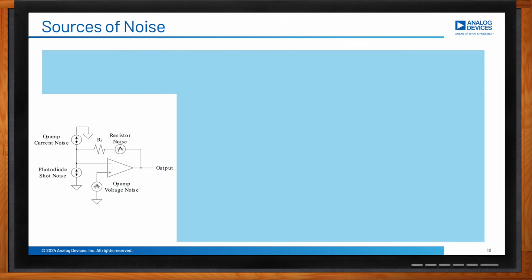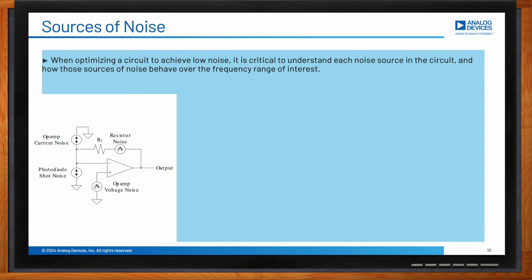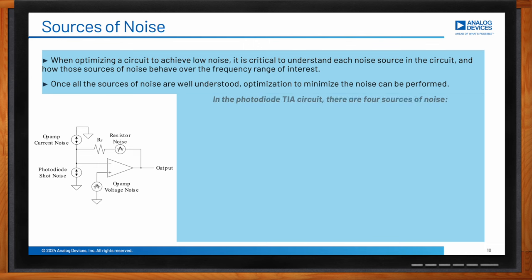There are four sources of noise in a TIA circuit: the op-amp's voltage noise generator, the op-amp's current noise generator, the shot noise from the photodiode, and the thermal noise from the feedback resistor. It's helpful to draw a schematic including all these noise sources to track each one during noise analysis.